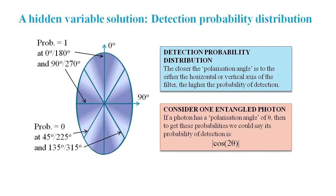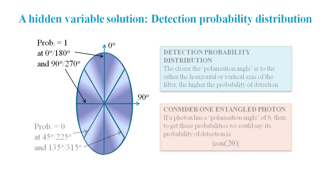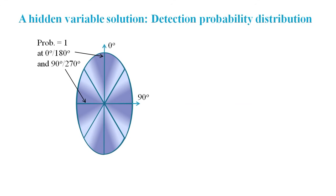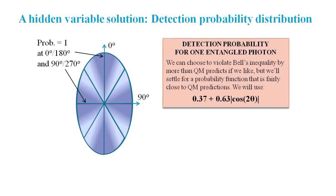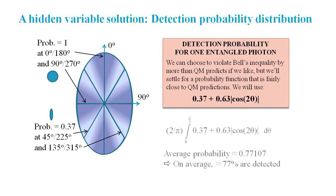But this doesn't work if we want to match the quantum mechanics predictions at all the Bell test angles. To match those predictions, we can use this expression for our distribution. This means that our lowest probability of detection is now 0.37 instead of 0. Going back to the coin analogy, this makes some sense because the thin edge of a coin will still have some area that can be detected. And when we calculate the average probability of being detected, we get 0.77.